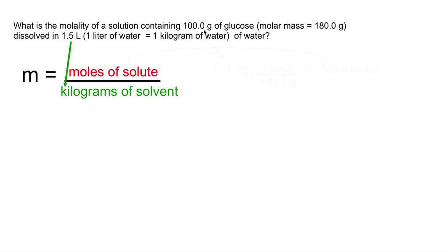They give us the mass of glucose, not the moles of glucose, so we have to do a quick mole-to-mass conversion. We're going to take the mass that they give us, 100 grams, multiply by the molar mass, actually divide by the molar mass, but multiply by 1 mole over 180, then we end up with 55.56 moles of glucose.